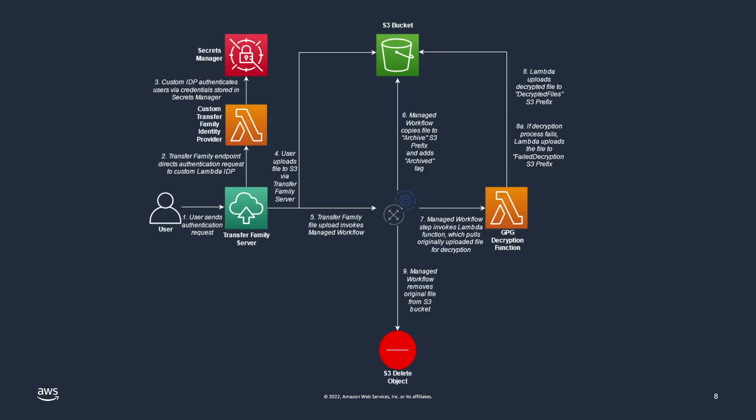Now that you're familiar with each step of the process, let's put it all together with this architecture diagram. First, the user sends an authentication request to the Transfer Family server endpoint, which is then forwarded to the custom Lambda function identity provider. The Lambda function checks if the authentication credentials match what is stored in Secrets Manager, such as a username and password. If these credentials match, the user is authenticated to the Transfer Family server. Step four is where the main part begins — when a user uploads a file to S3 via Transfer Family, the managed workflow gets invoked and goes through the four steps discussed earlier.